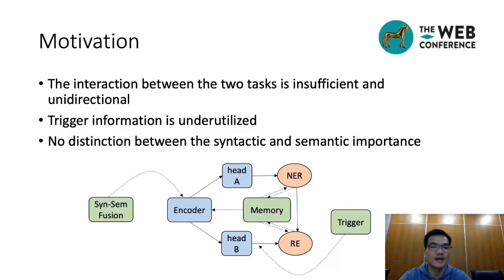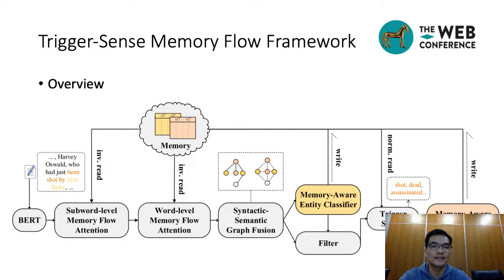This is the overall architecture of our model. It consists of five main modules: memory, multi-level memory flow attention, syntactic-semantic graph weighted fusion, trigger sensor, and memory-aware classifier. In summary, our model performs four-level encodings including subword, word, span and span pair, and two-step classification: entity classification and relation classification.